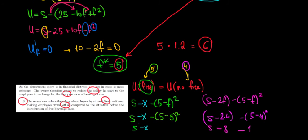What we can see is that the reduction in salary, this one minus X, is equal to minus 8 minus 1. And that is minus 9.